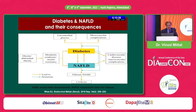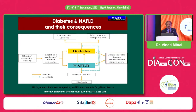NAFLD and diabetes have a very close relationship. Once there is increased free fatty acid in the blood taken up by the pancreas, there is insulin deficiency, and these fatty acids are also taken up by the liver. NAFLD and diabetes have a hand-in-hand relationship — they mutually increase each other. If a patient has diabetes, there are more chances of having NAFLD, and vice versa — a patient with NAFLD has a very high risk of developing diabetes.